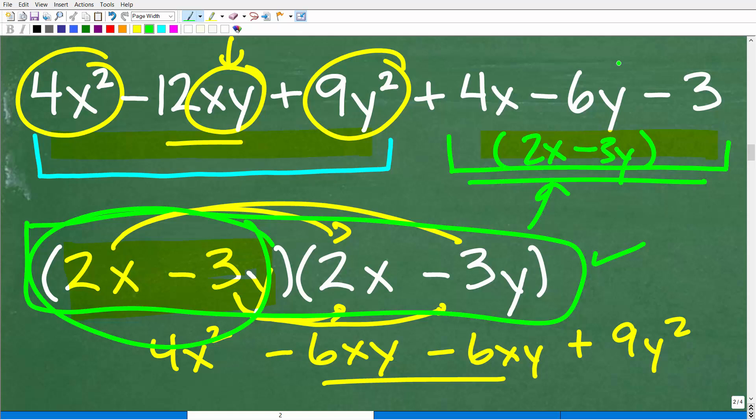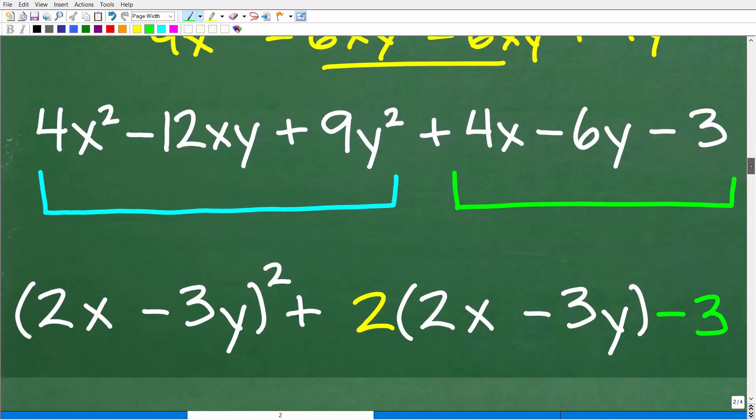Well, hopefully you're like, yes, Mr. YouTube Mathman. I see it right there. 4x minus 6y. I can factor. And indeed, you can. So, if we can factor this part right here. 4x minus 6y. We can factor out a 2, the greatest common factor. So, that's going to be 2 times 2x minus 3y.